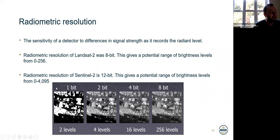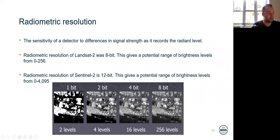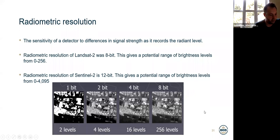Regardless of pixel spacing, you can see that the same image with different bit depths — different radiometric resolution — will provide much more detail. One bit is just two levels: black and white. But with 8 bits we can have much more information, and 12 bits even more.